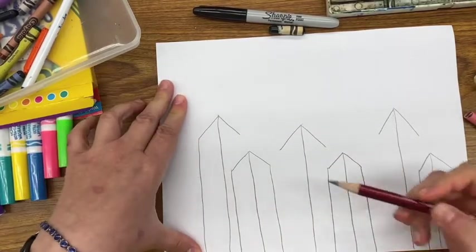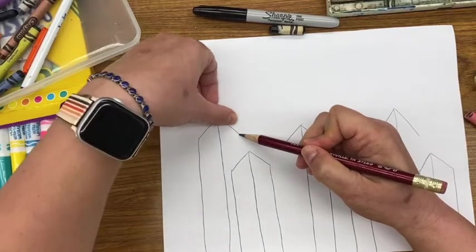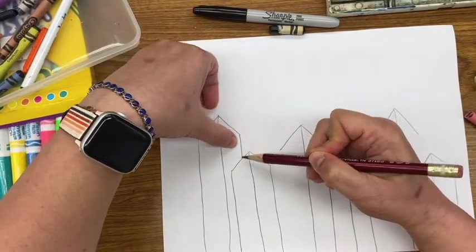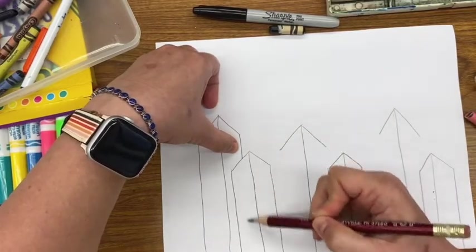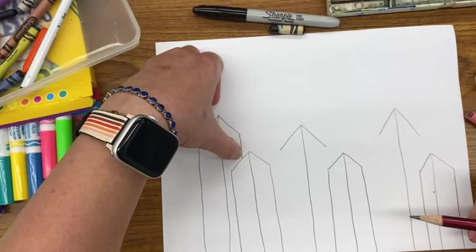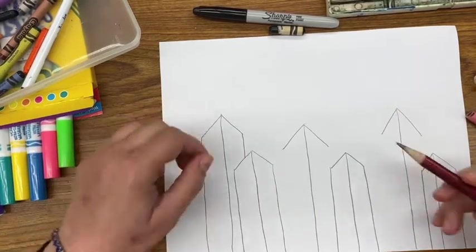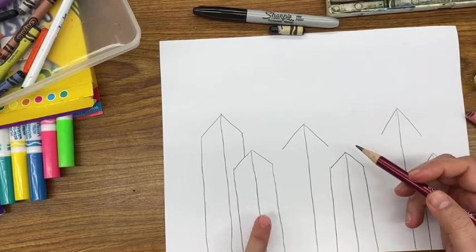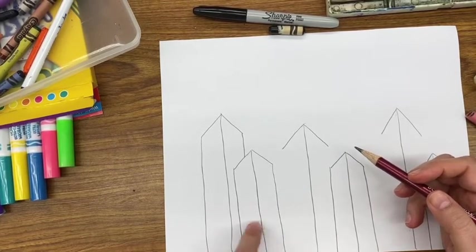And I'm going to draw a straight line going from the end of the V, but instead of going right through the second group of lines, I'm just going to stop right there at the top. So it'll look like that building is closer or in front of the building that we drew in the beginning.